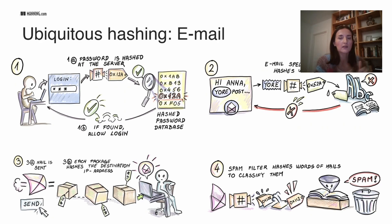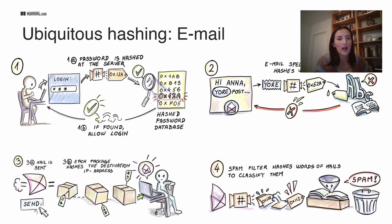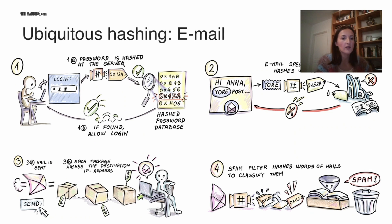As you write an email, a spell checker will hash words to check whether something is correctly spelled. When you send an email, each email is split into little packets and each packet carries a hash — a hash of a destination IP address. So if it's a non-existing hash, then the packet bounces. And on the arriving side, when somebody receives your email, a spam filter might use hashing to check whether your email contains spam-like words to classify it as spam.